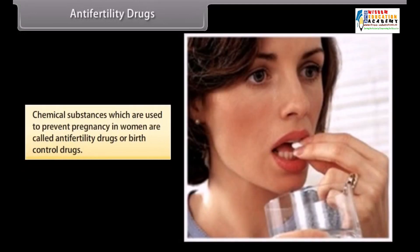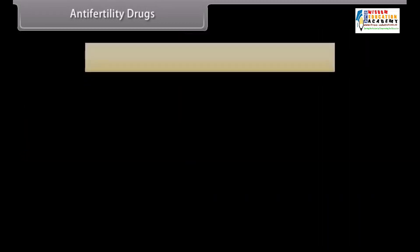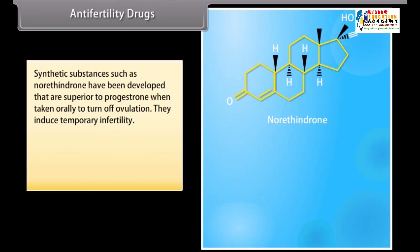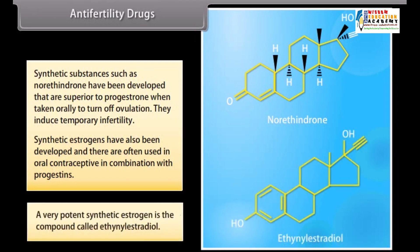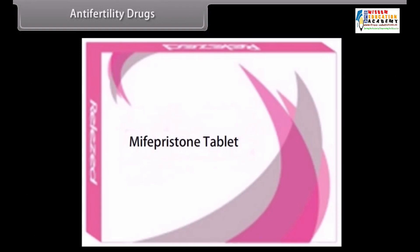Anti-fertility drugs: chemical substances used to prevent pregnancy in women are called anti-fertility drugs or birth control drugs. Progesterone is the most common progestin. Synthetic substances such as norethindrone have been developed that are superior to progesterone when taken orally to turn off ovulation; they induce temporary infertility. Synthetic estrogens have also been developed and are often used in oral contraceptives in combination with progestins. A very potent synthetic estrogen is the compound ethinyl estradiol. Mifepristone is a synthetic steroid that blocks the effects of progesterone and is used as a morning-after pill in many countries.